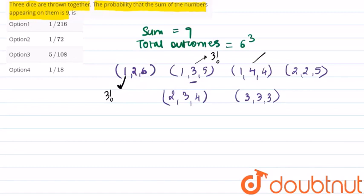Number of ways for 1, 4, 4 is 3!/2!. For this case it is 3!/2!. For 2, 3, 4 it will be 3! and number of ways for 3, 3, 3